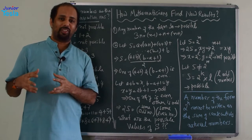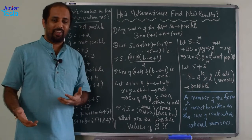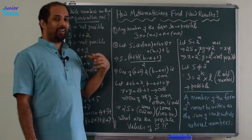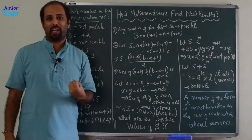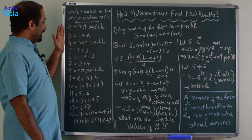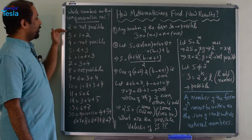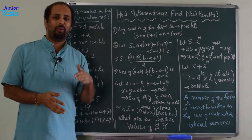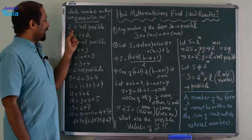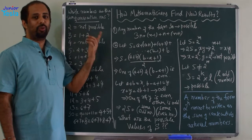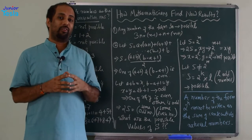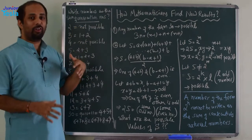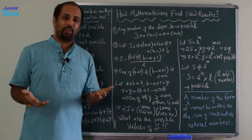Writing numbers as sum of 2 or 3 or 4 natural numbers — if I take this exercise up seriously, what results can I obtain? I have taken 2 as the starting point. 1 is equal to 1, a trivia, so I am not touching 1. I have started with 2. So, 2 is equal to 2 — I cannot write it as sum of consecutive natural numbers. So, 2: not possible to write as sum of consecutive natural numbers.